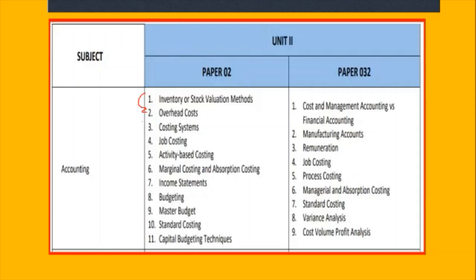In module two, we're looking at the costing systems: job costing, activity based, and marginal and absorption costing. So we're looking at the costing systems today — job costing, activity based, marginal cost, and absorption. The income statements should be falling into that there as well.